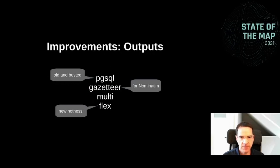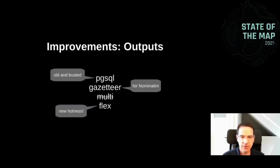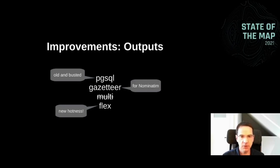The main improvements are in the outputs, which decide how exactly the data is imported into the database. The classical output is the pgsql output — that's what most users have been using. The gazetteer output is specialized for Nominatim, the geocoder, and is only used for that. The multi-output was an experiment for more flexible output but was never really used by anybody, so we removed it in this version. And the new hotness is the flex output, which makes osm2pgsql much more flexible and usable in many more use cases.